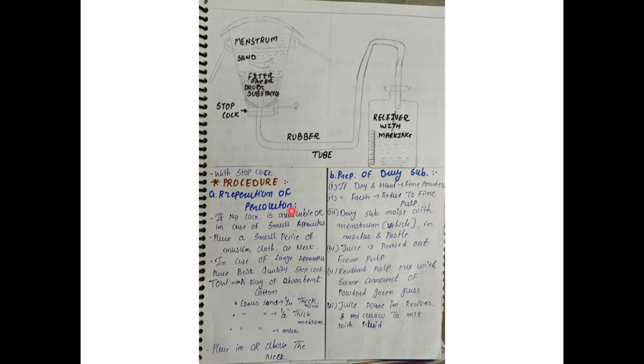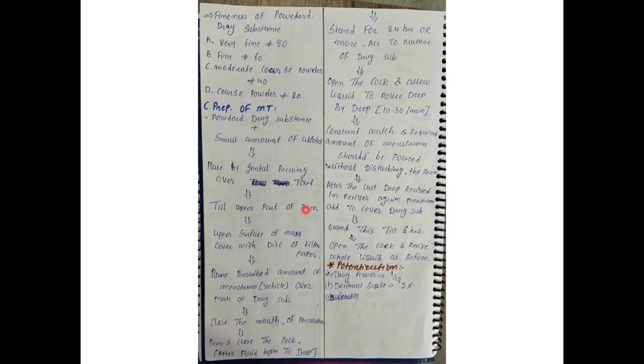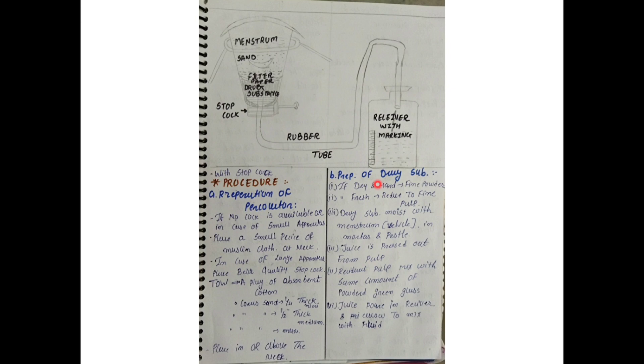Along with that, we will do the potentization of this method. We need to make mother tincture. This is the percolation method, which is called the new method. The old method was the 9-class method, which I covered in the first video. So first of all, let's start with this procedure.